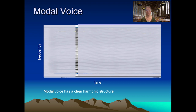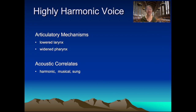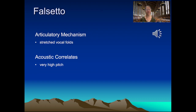We can actually produce voicing that is even more harmonic — highly harmonic — than in the modal case. That is produced with a lowered larynx and a widened pharynx, and is a bit more musical, more like a singing voice — for example, calling out 'yoo-hoo.' The last form of phonation we'll look at is falsetto, which is characterized by stretched vocal folds that yield a very high pitch in speech.